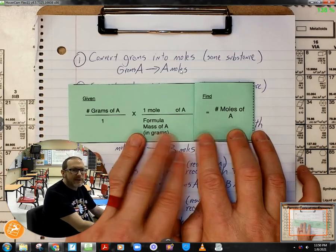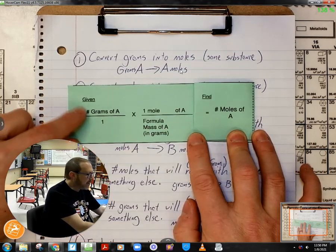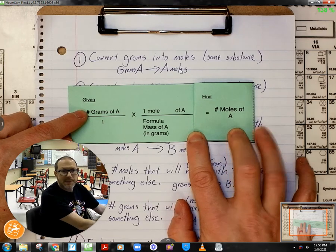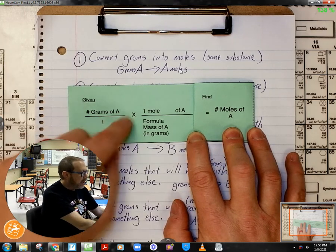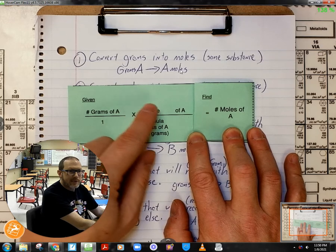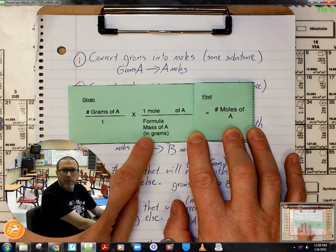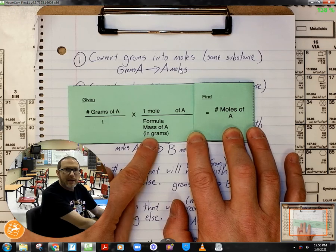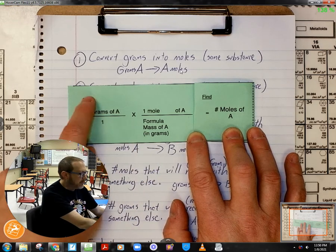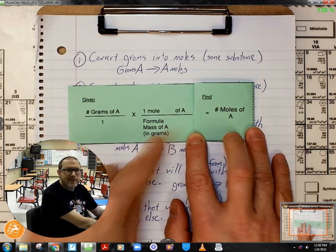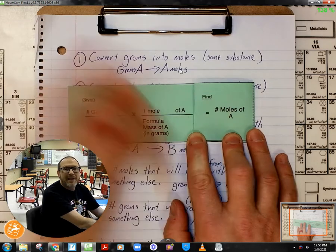And so you can see right here I've got this set up in such a way where if I am given a certain number of grams of substance A, then I know in my next step I'm going to put one mole of A on top and then I'm going to put the molar mass of A on the bottom, which simply means I'm going to be dividing by the molar mass to change it to moles. Now that's simple.